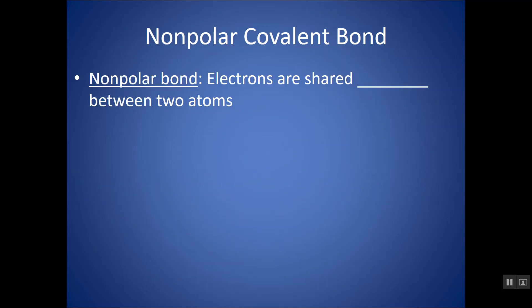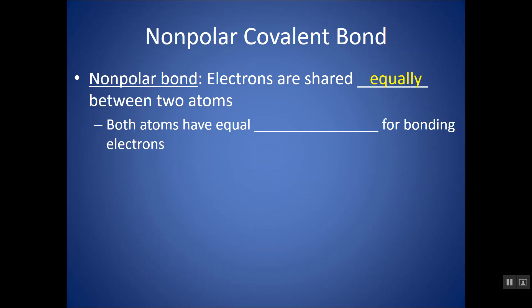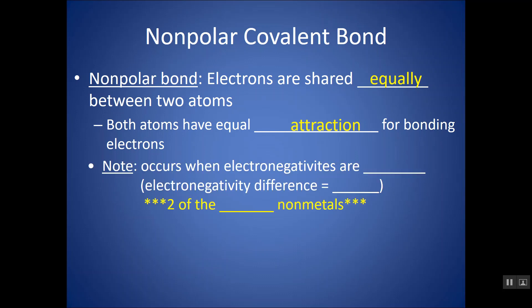In a non-polar covalent bond, electrons are shared — because it's covalent — and they are shared equally between the two atoms in your bond. In order for electrons to be shared equally, both atoms have to have the exact same attraction for bonding electrons. That attraction is called electronegativity. So essentially, this is when your electronegativities of each atom are equal, or the difference is zero.